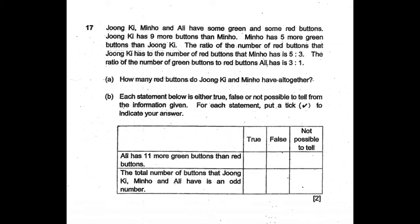Junki, Minho and Ali have some green and some red buttons. Junki has nine more buttons than Minho. Minho has five more green buttons than Junki. The ratio of the number of red buttons that Junki has to the number of red buttons that Minho has is 5:3. The ratio of the number of green buttons to red buttons Ali has is 3:1.